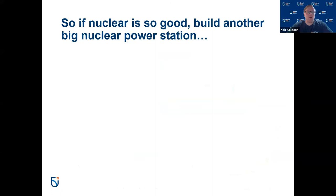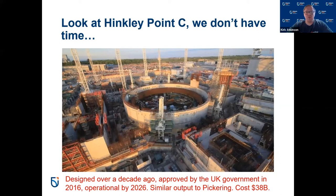The question comes up: if nuclear is so good, why not build another big nuclear power station? Well, if we look at England, Hinkley Point C has been under construction for a number of years. It was approved in 2016 from a design from some years before, and hopefully will be operational by 2026 — at a cost of around 38 billion dollars. With around similar output to Pickering, that's huge. If we started now, we wouldn't have anything operational until probably the middle of the next decade, so that's no good for our climate targets. That brings us to what the hype about SMRs is — and it's not hype.